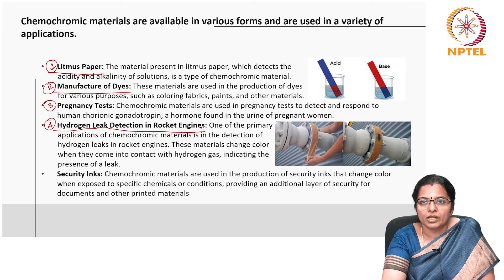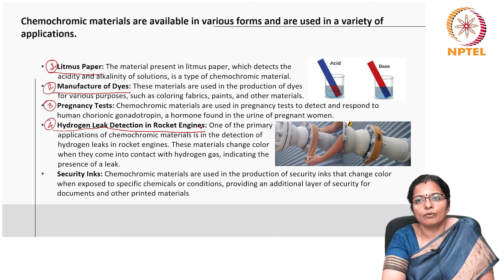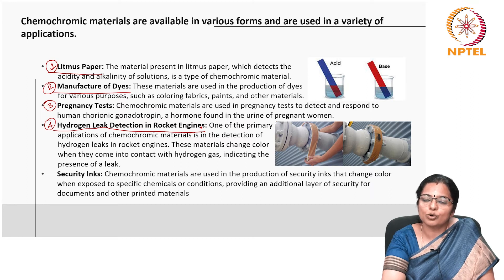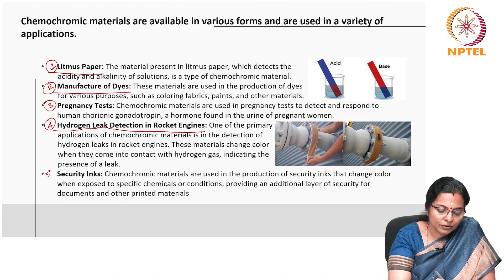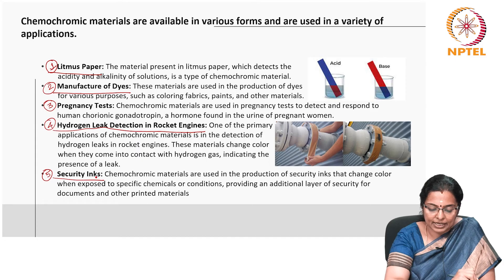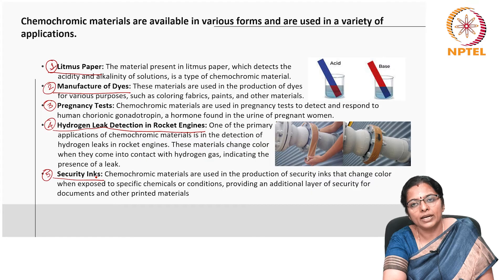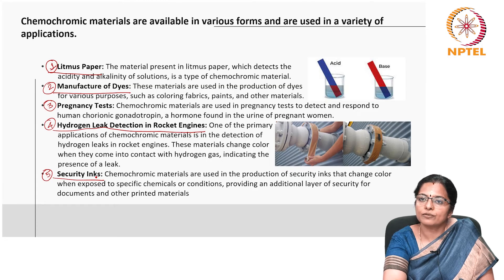The fourth application is hydrogen leak detection in rocket engines — one of the primary applications of chemochromic materials, as these materials change color when they come into contact with hydrogen gas, indicating the presence of a leak. The fifth application is security inks: chemochromic materials are used in the production of security inks that change color when exposed to specific chemicals or conditions, providing an additional layer of security for documents and other printed materials.